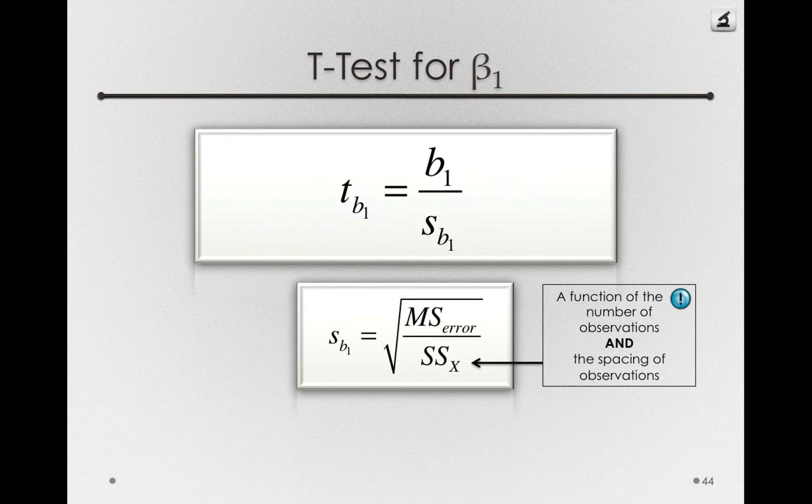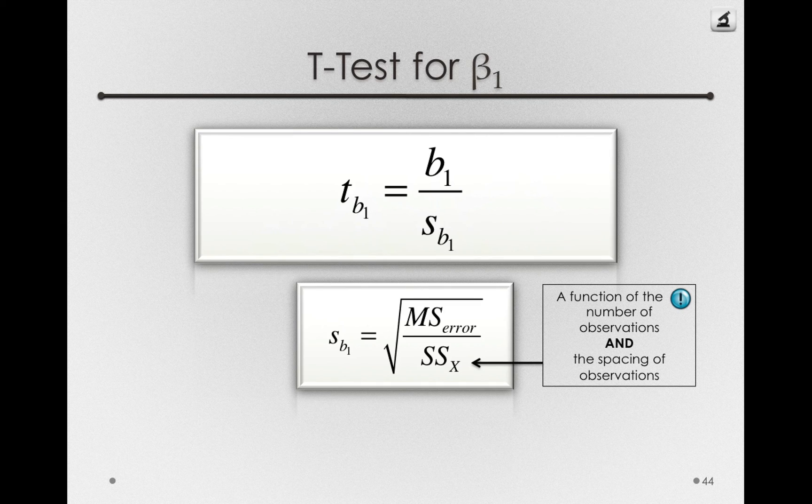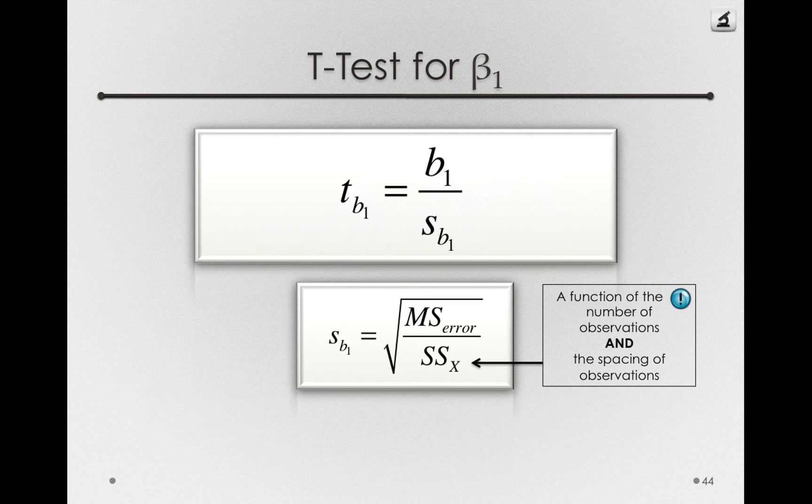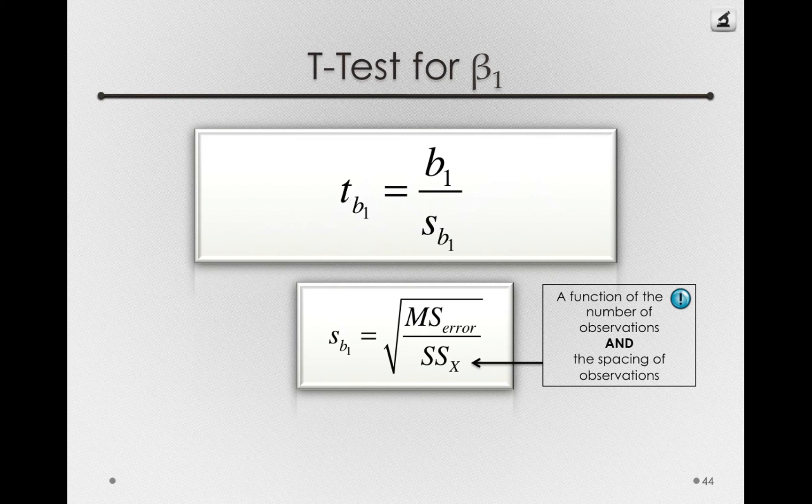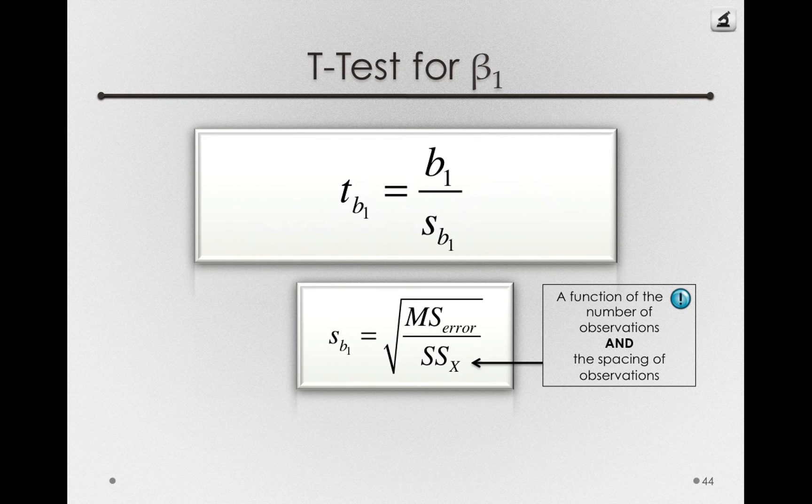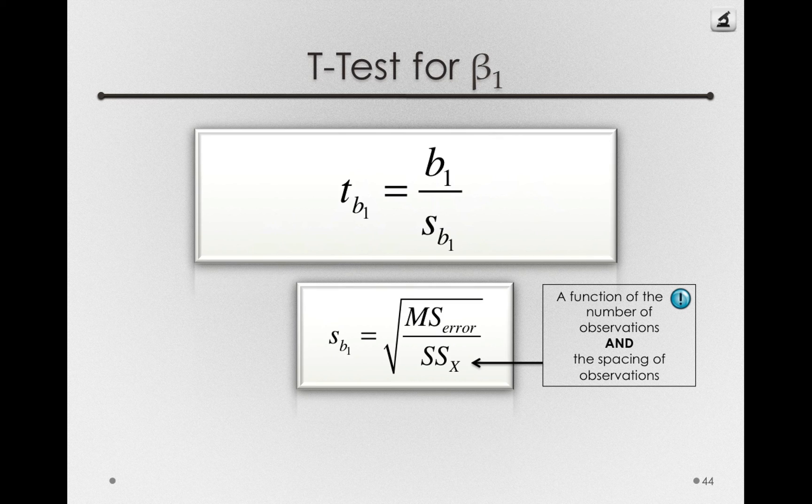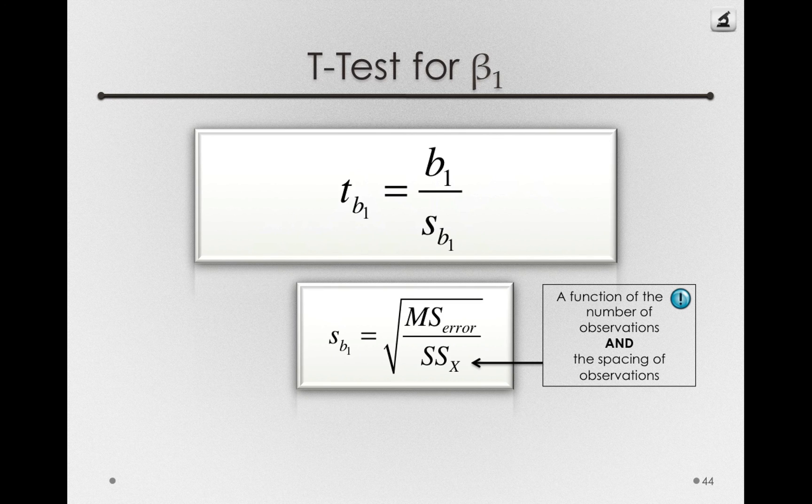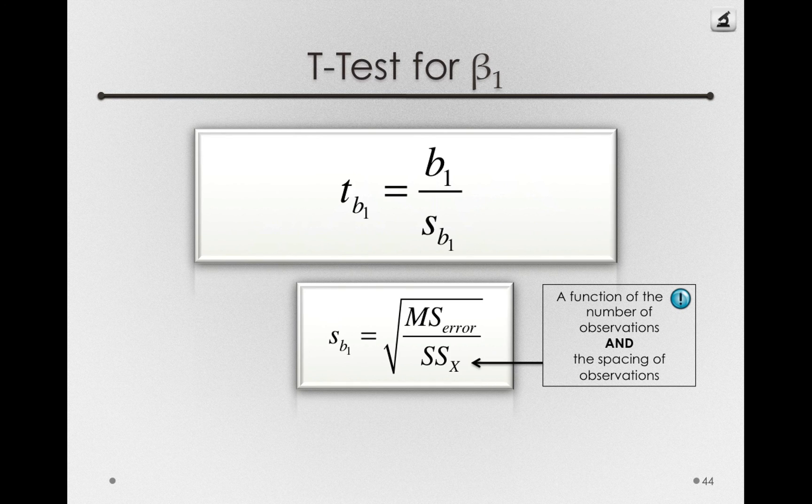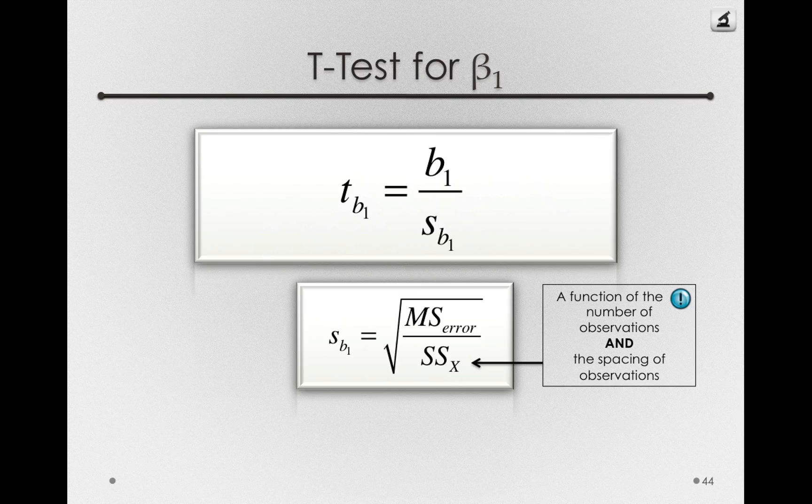Our estimate for beta1 is sensitive to how you space those observations. If it's critically important that you estimate beta1 well, you want to space your observations as much as possible. If possible, measuring somebody at one hour of studying all the way up to a thousand hours. If you space those observations a lot, you will get a more stable estimate of the population slope.